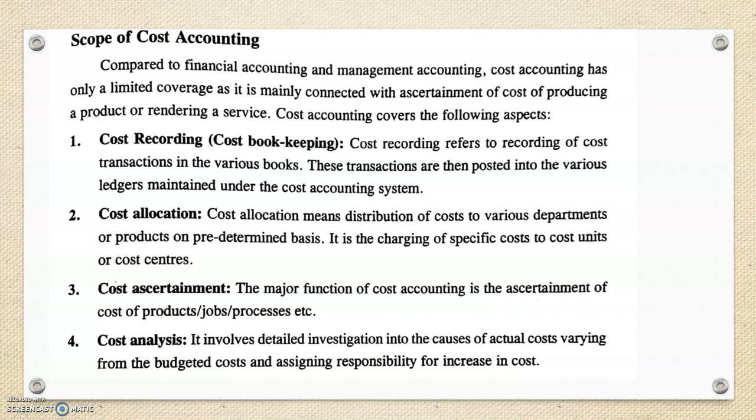We have the scope of cost accounting. We are doing a product, service, job, or process — that is why we have a cost asset. We have a budget fixed. How to fix the budgeted cost — that budgeted cost we actually use to increase or measure the cost. There is a comparison.